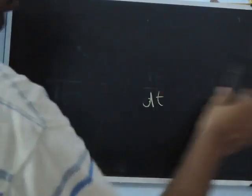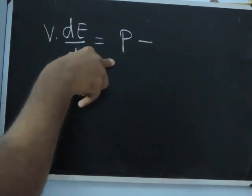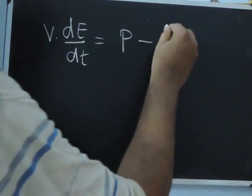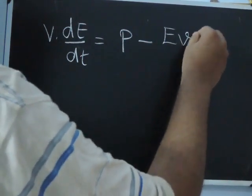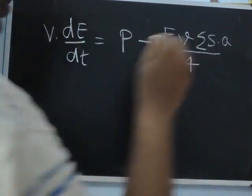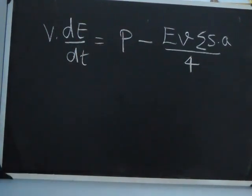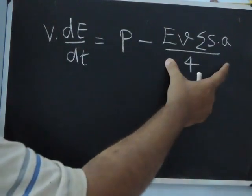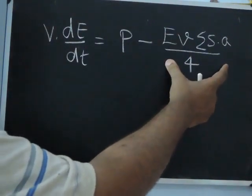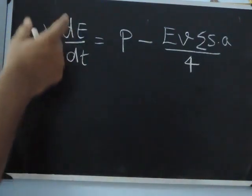How does this happen? We are talking about growth of sound energy. So typically V DE by DT will be P, the power of the sound source, minus the total energy absorbed, which is EV into summation of SA by 4. This is the sound power of the source — energy given per unit time. This is the total energy absorbed by all the surfaces in unit time. The difference results in the increase in energy.